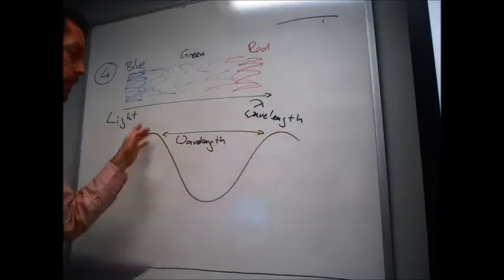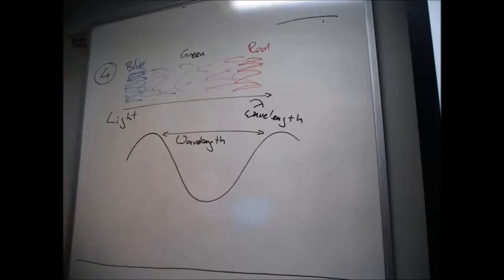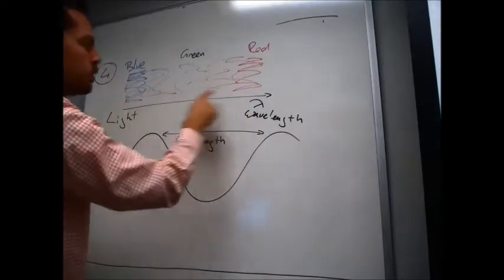And the wave from peak to peak, the distance, that's classified as a wavelength. So light contains all different colors, i.e. waves, with all different wavelengths.